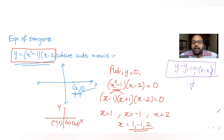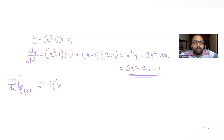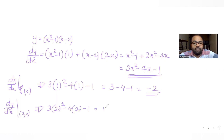Now we find the slopes at all three points. At x equals 1: dy/dx equals 3 times 1 squared minus 4 times 1 minus 1, which is 3 minus 4 minus 1 equals minus 2. At x equals 2: dy/dx equals 3 times 4 minus 4 times 2 minus 1, which is 12 minus 8 minus 1 equals 3.